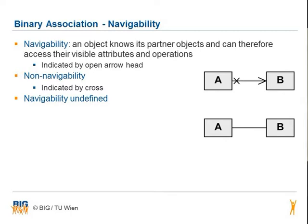It is assumed that it is navigable in both directions. A can access attributes and operations of B and the other way around.